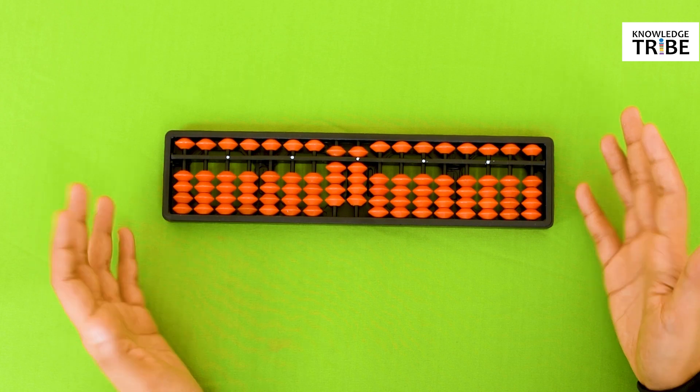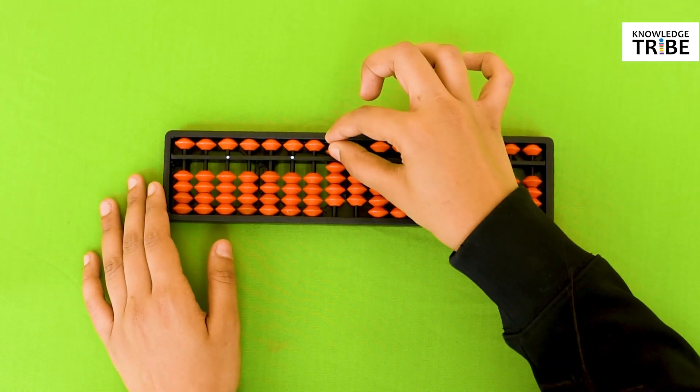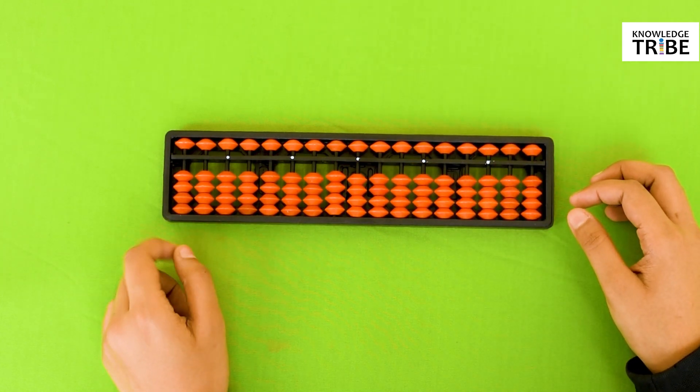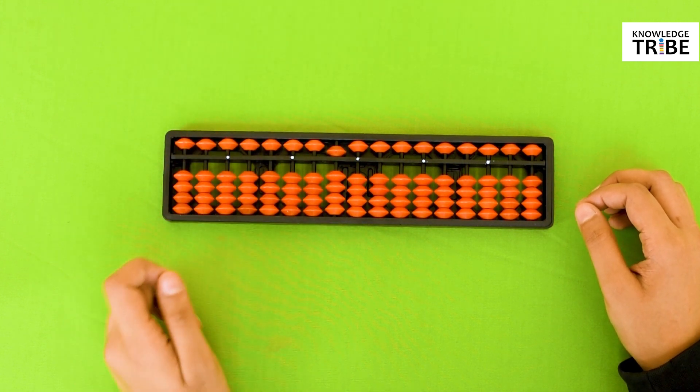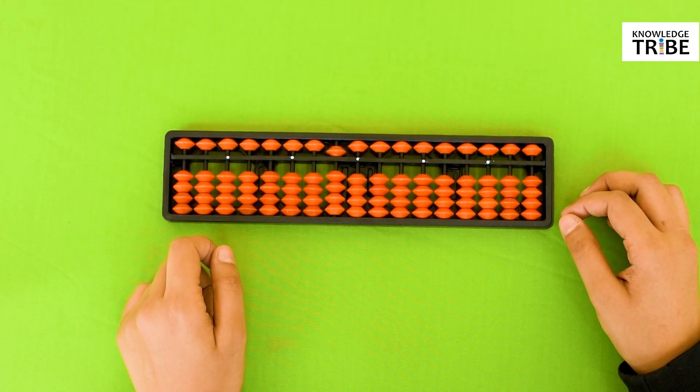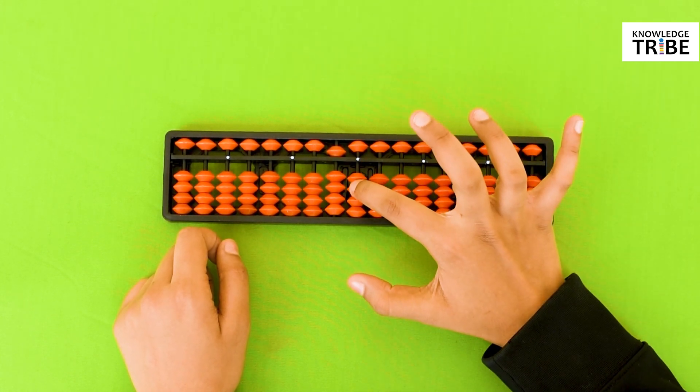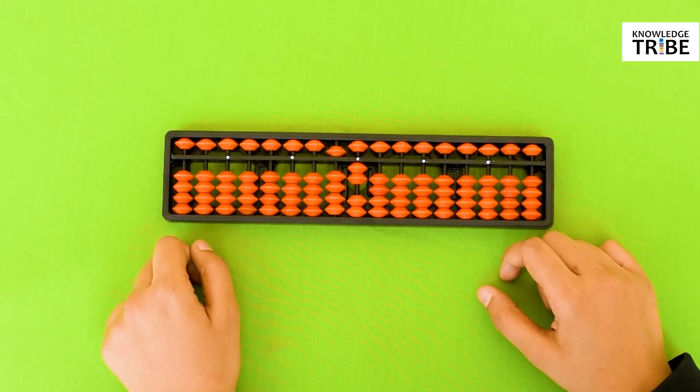So explorers tell me how to count 52 on an abacus. Wonderful. Move the heavenly bead from the 10's column towards the center beam and 2 earthly beads from the 1's column. Perfect. Now you can count till 99 on an abacus.